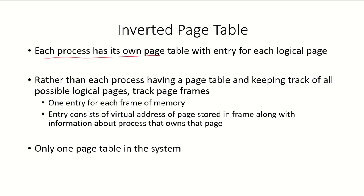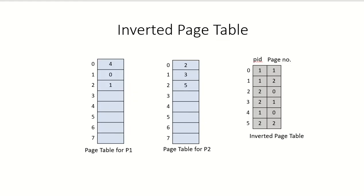We know that each process has its own page table and there is an entry for each logical page. Rather than each process having its own page table and keeping track of all its logical pages, we can use the inverted page table to track the page frames. In the earlier case, there was a page table for process 1, a page table for process 2, and so on. Assuming there were only 8 pages in the logical address space, the page table would have 8 entries, one for each logical page, indicating which frame each page has been mapped to.